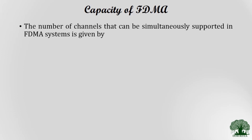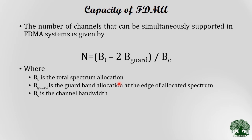The capacity of FDMA — meaning the total number of channels that can be simultaneously supported — is given by the equation: N = (BT − 2×BG) / BC, where BT is the total spectrum allocation for the system, BG is the guard band allocation at the edge of the allocated spectrum, and BC is the total channel bandwidth. Substituting these values gives the maximum number of channels in FDMA.